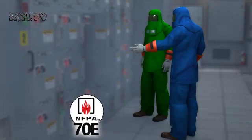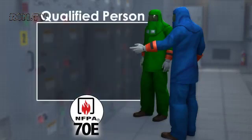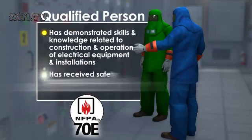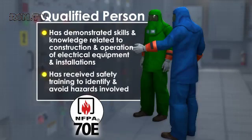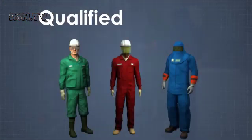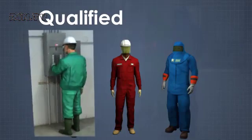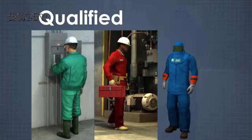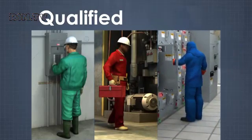According to NFPA 70E, a qualified person is one who has demonstrated skills and knowledge related to the construction and operation of electrical equipment and installations, and has received safety training to identify and avoid the hazards involved. Being qualified is considered on a task-by-task basis — a person who is qualified for one electrical task may not be considered qualified for another task.